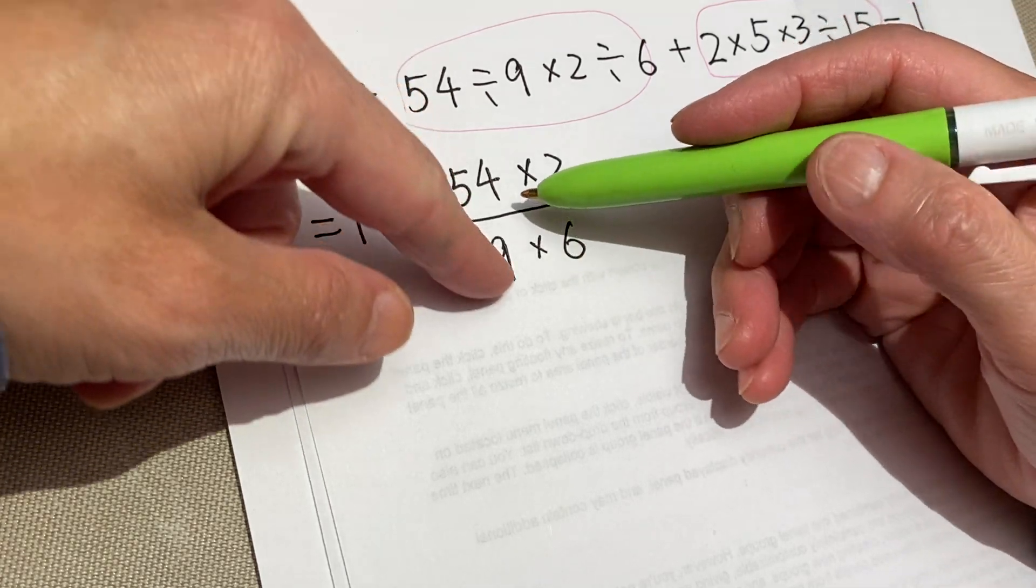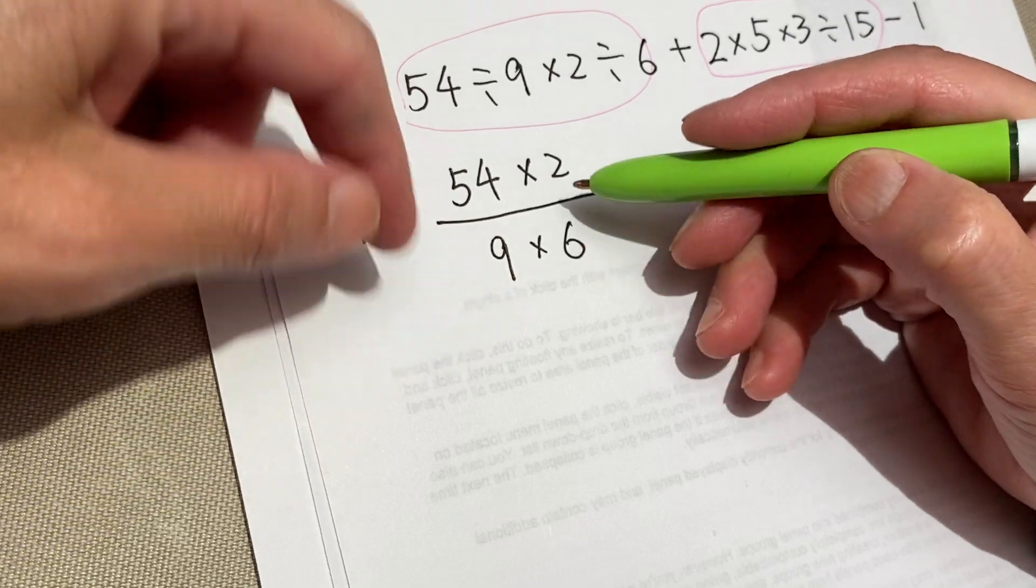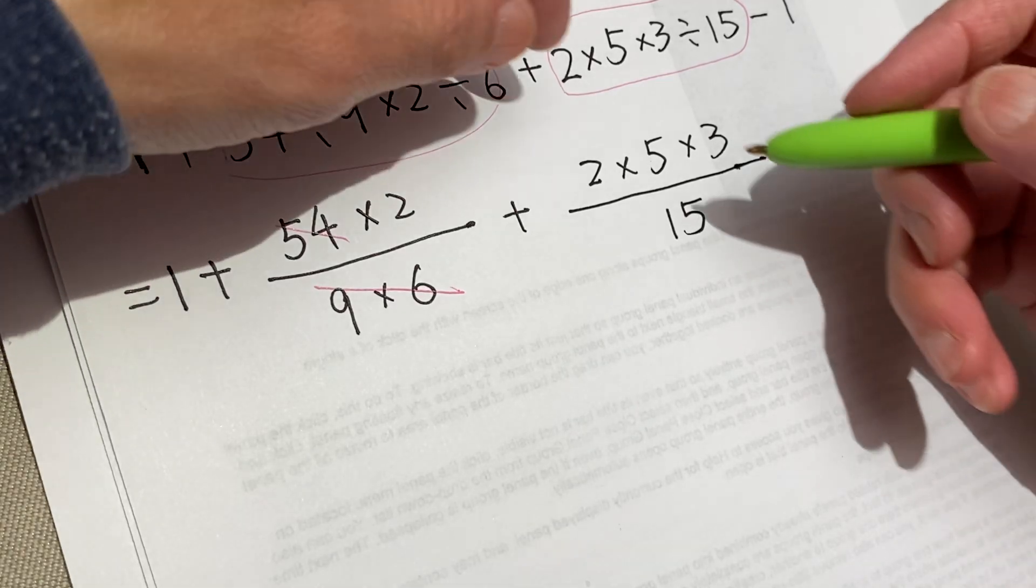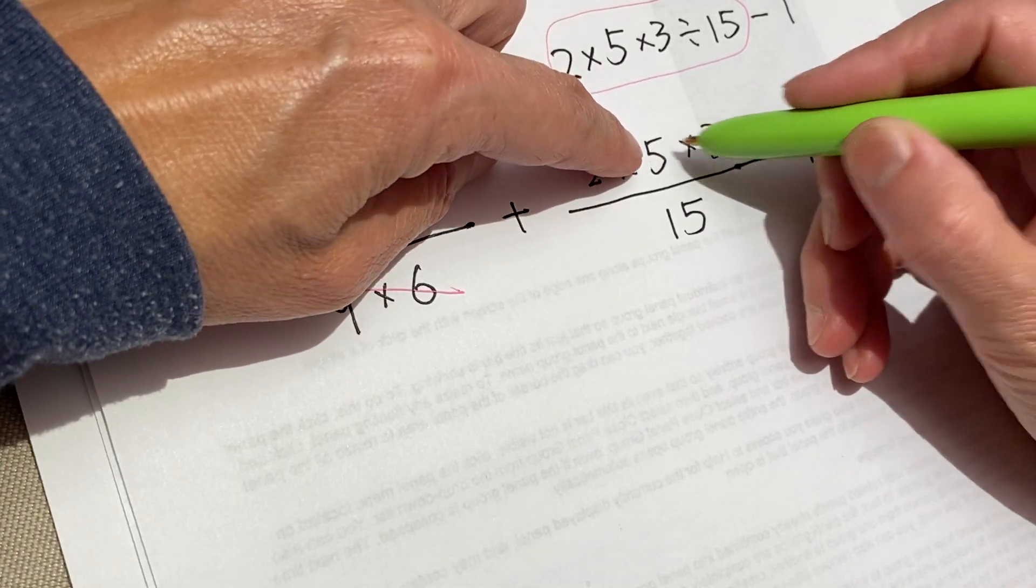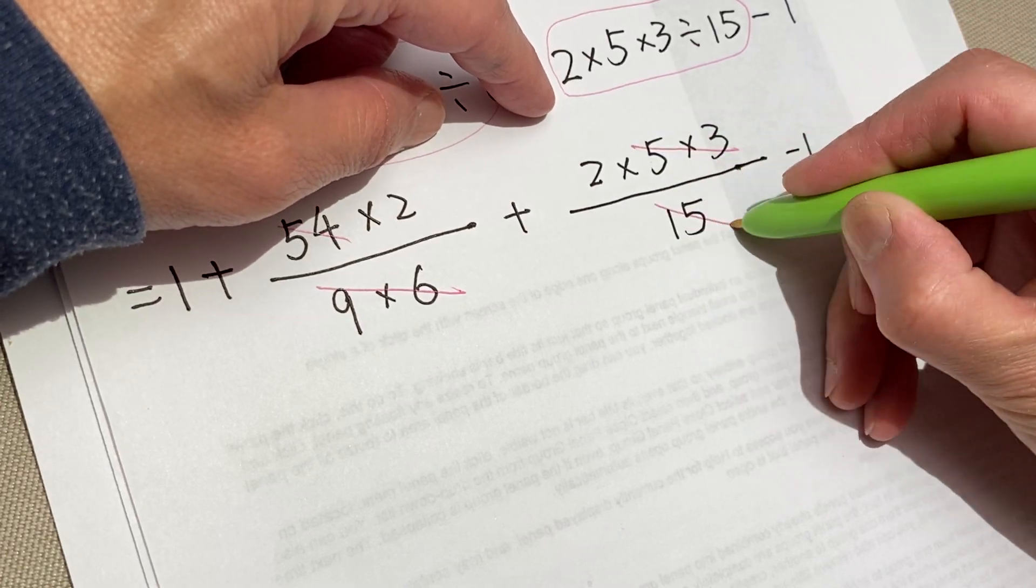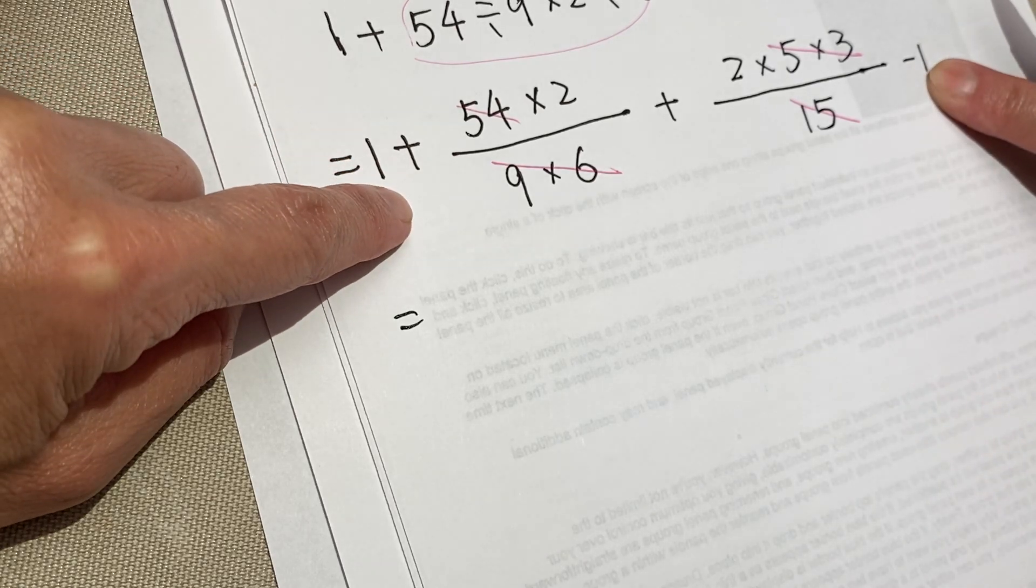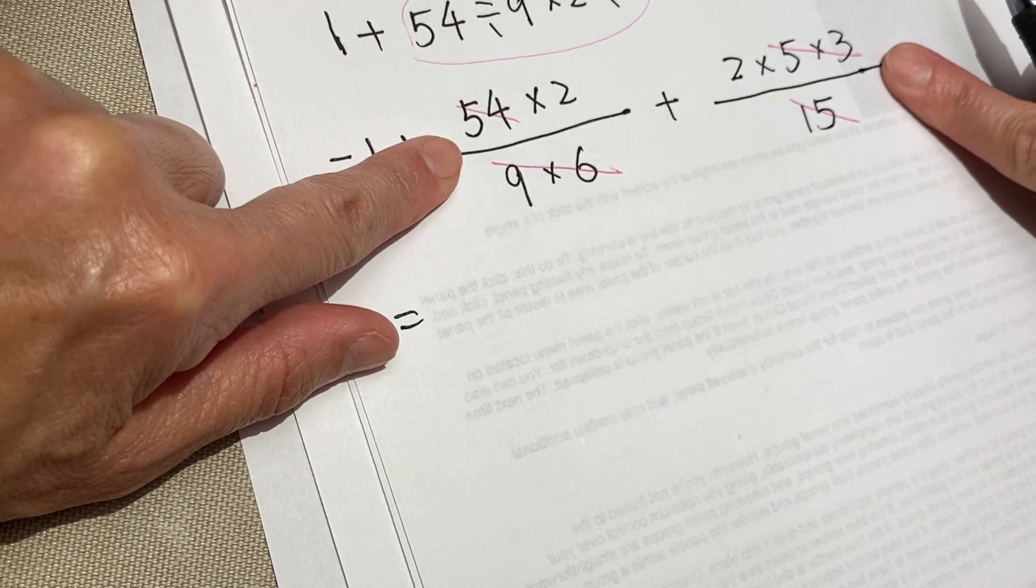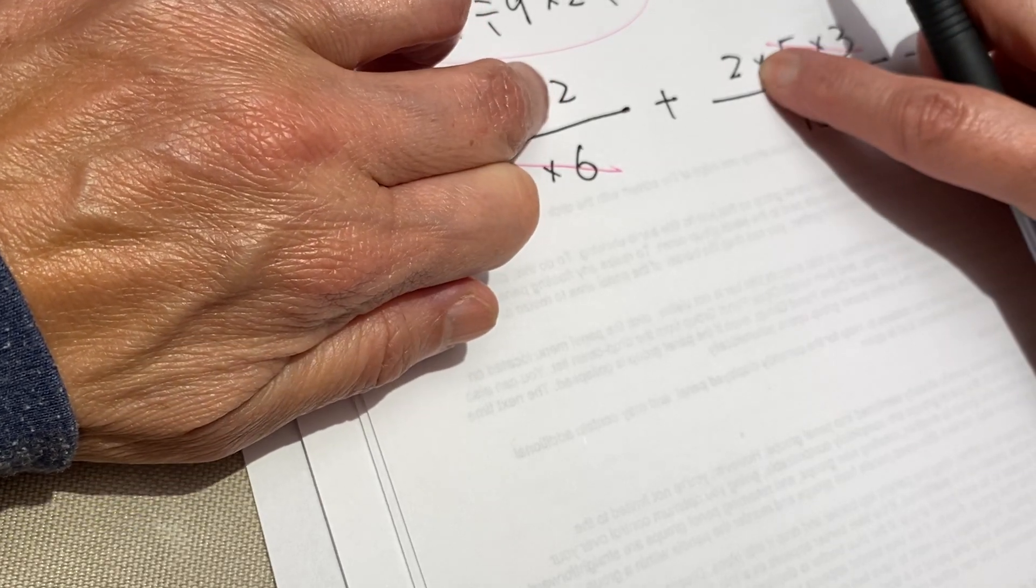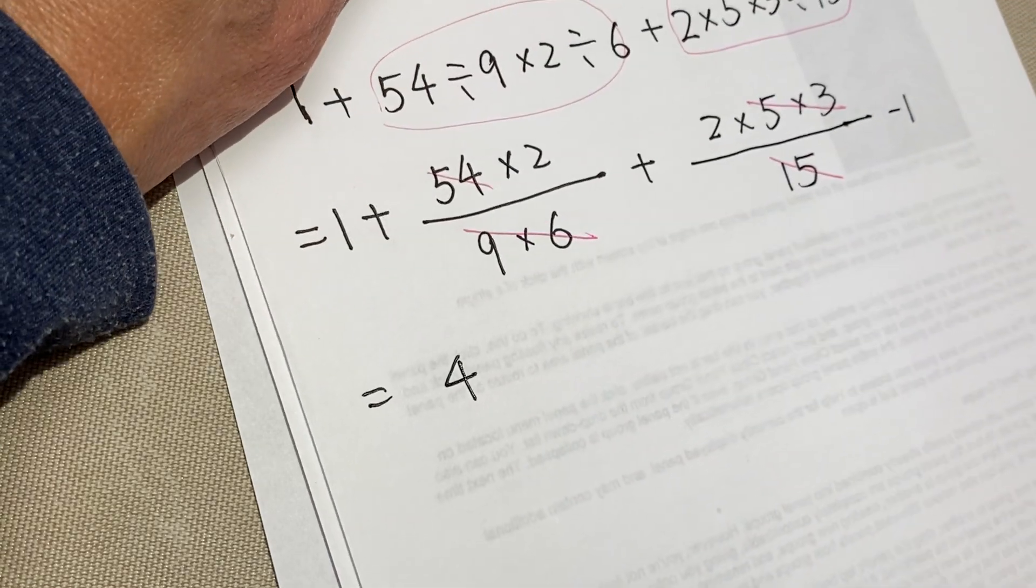So this 54, 9 × 6 = 54. Get out of here. You are all gone. And this one, 3 × 5 = 15, 15, 15, and 15. Gone. With the wind. Positive 1, negative 1. 1, 1, 1, 1, 0. Go. So here you have 2, here you have 2. 2 + 2 = 4. Equal to 4. And that is the result. Okay?